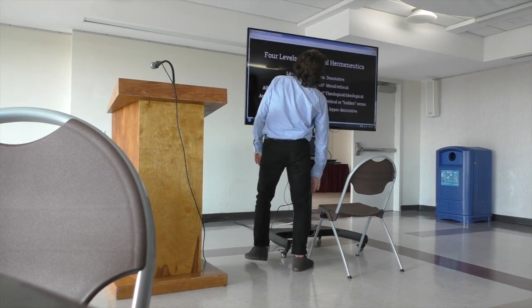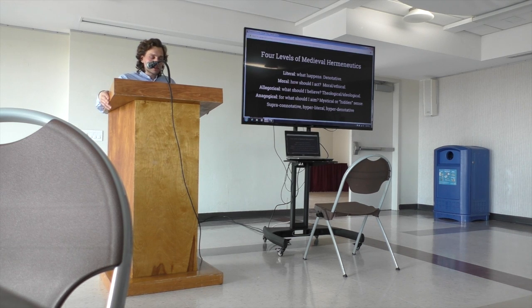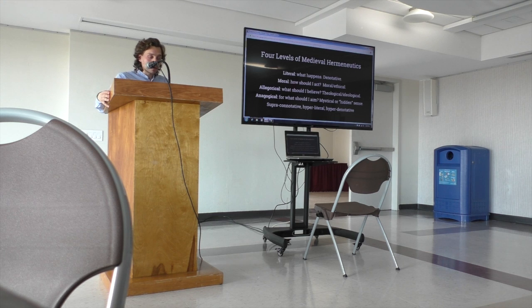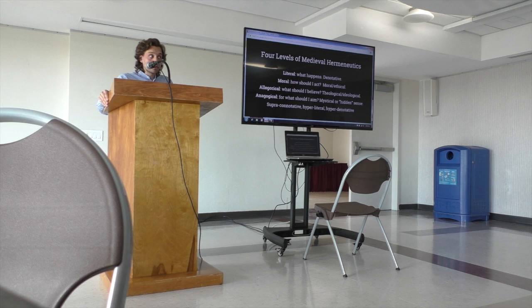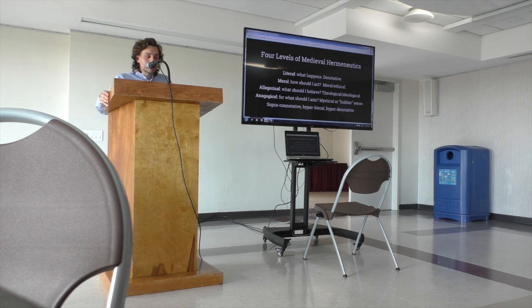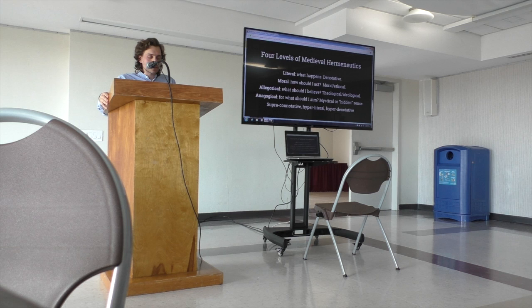Anagogical Griselda, and let me talk about a little bit of medieval hermeneutics here. So in the medieval tradition of reading and interpretation, there are four levels of meaning: the literal, the moral, the allegorical, and the anagogical. There is the literal level, just what happens, purely indicative or denotative. Then there is the moral level, which is the interpretation that tells one how to act. Then the allegorical level, which gives a text its theological or ideological meaning, tells one what to believe. Then the anagogical level, which is the mystical or hidden sense of the text that goes beyond any set of received beliefs or systems of thought.